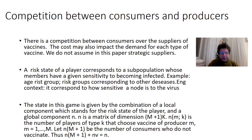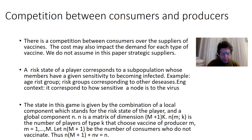We next describe the state of the system. There is a risk state of a player that corresponds to a sub-population whose members have a given sensitivity to becoming infected. Examples are age, risk group, or risk groups corresponding to other diseases. In engineering, it corresponds to how sensitive a node is to the virus.